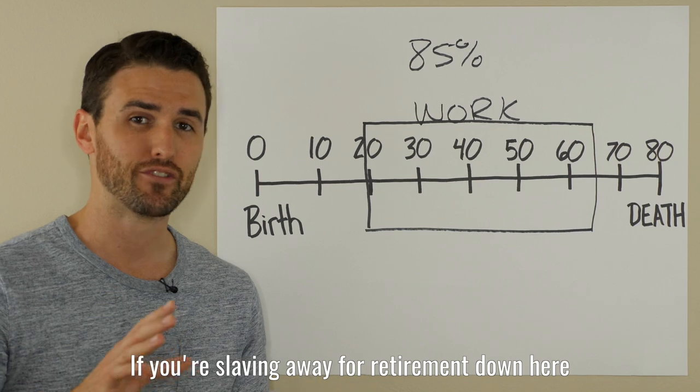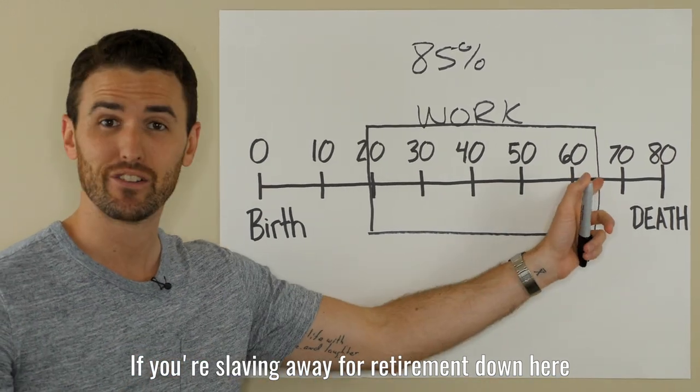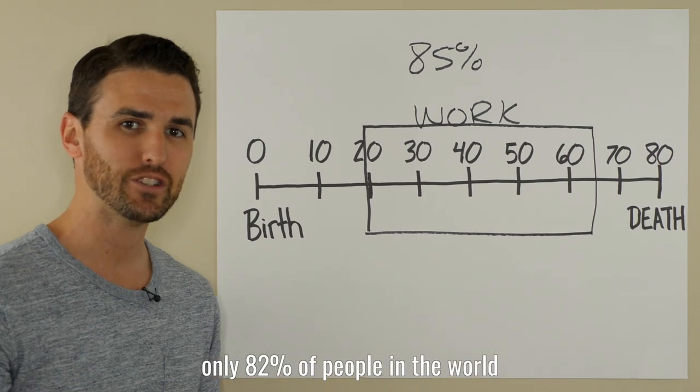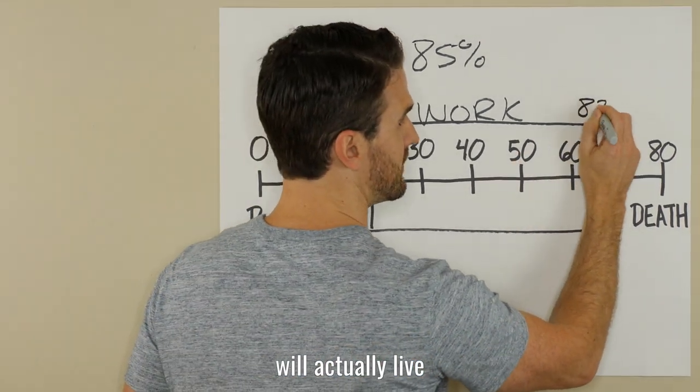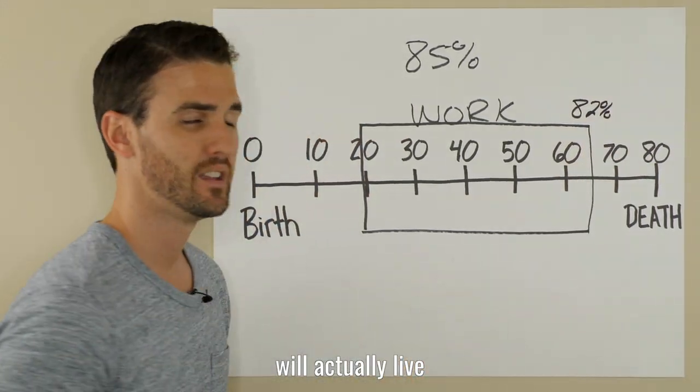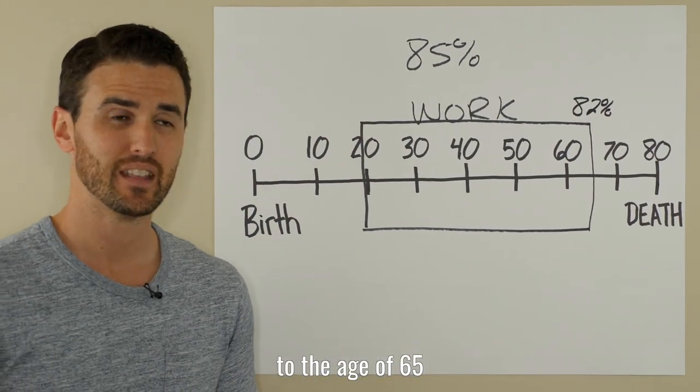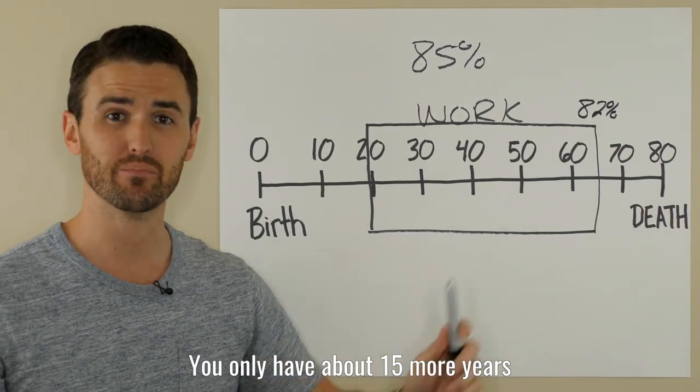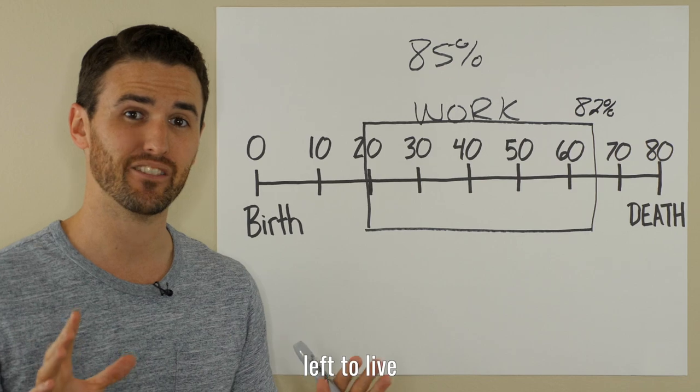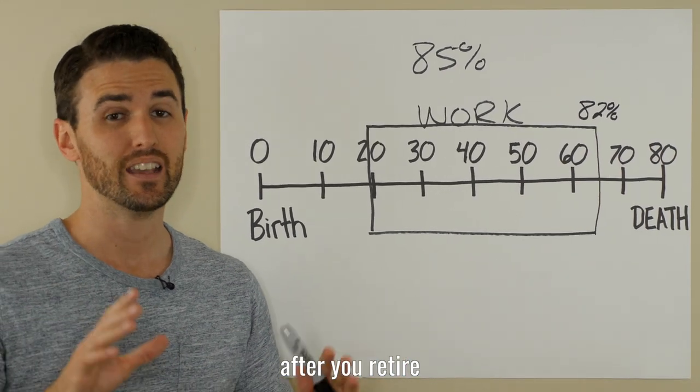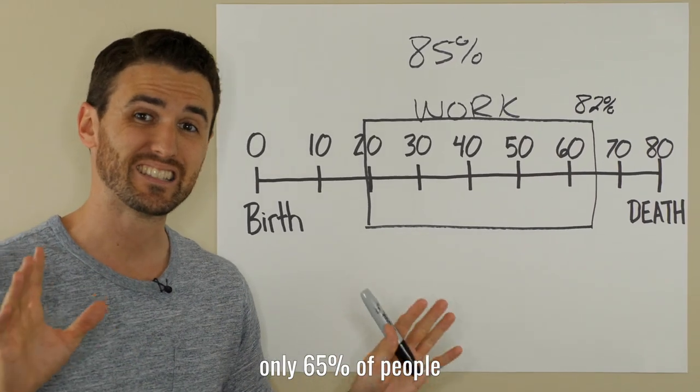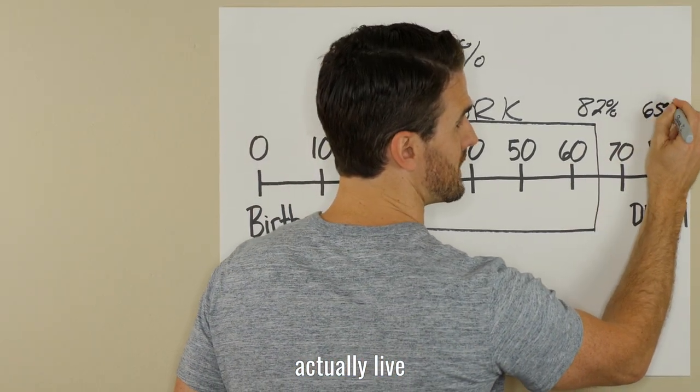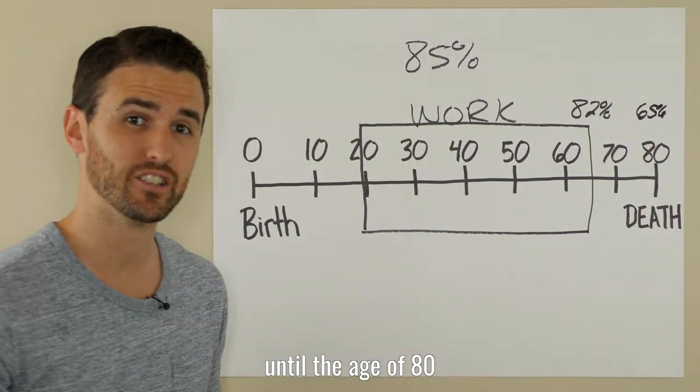And just so you know, if you're slaving away for retirement down here, you're missing the point. Because only 82% of people in the world will actually live to the age of 65. And if you get to 65, on average, you only have about 15 more years left to live after you retire. And also so you know, only 65% of people actually live until the age of 80.